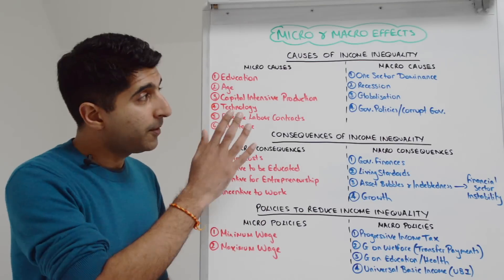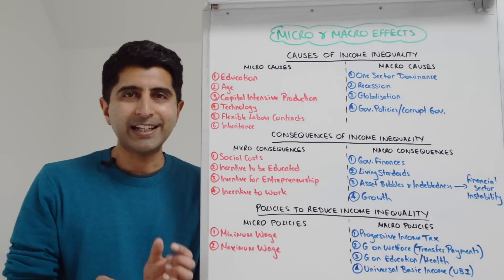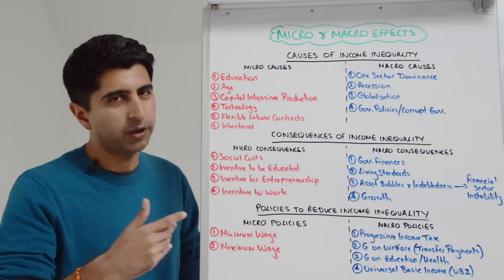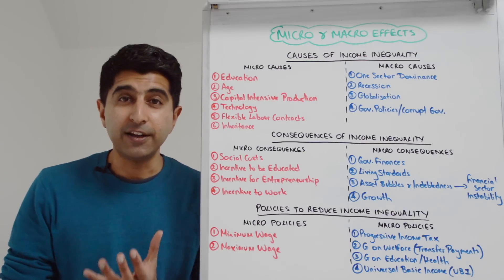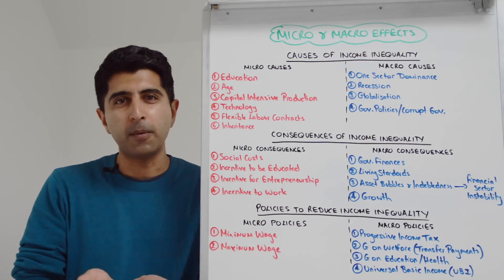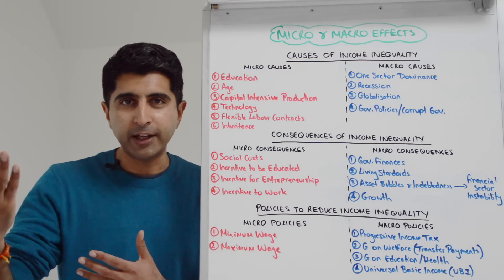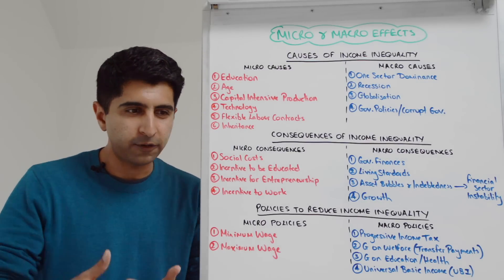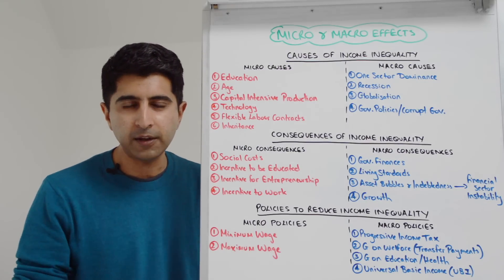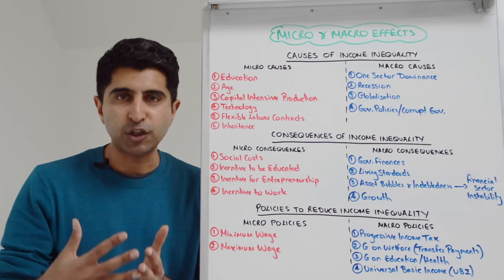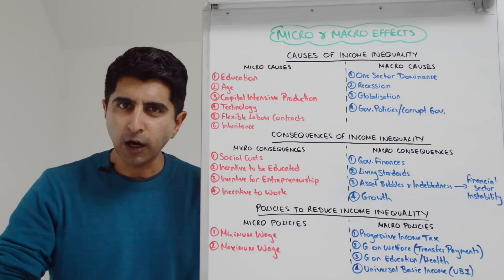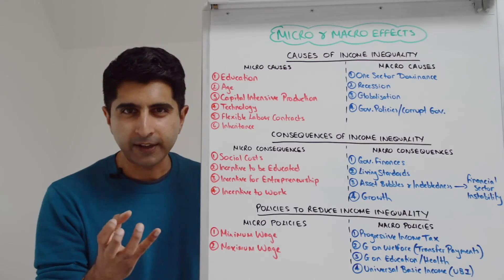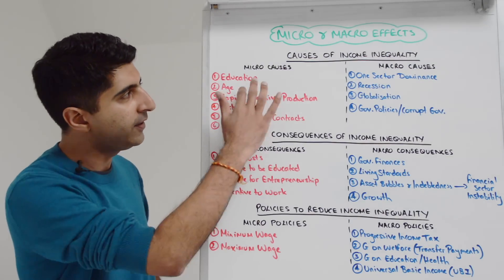Let's dive in now with micro and macro causes of income inequality. Starting with micro causes, we're looking at direct demand and/or supply determinants in the labor market. Number one: differences in education — those who are more educated will naturally be earning higher incomes than those who are less educated. Also age: older workers with more experience, more skills, greater human capital will be earning more than younger workers.